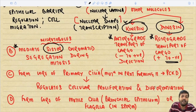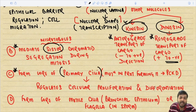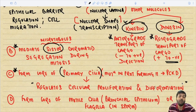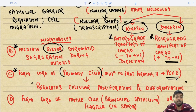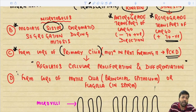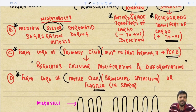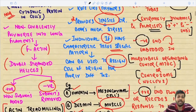Microtubules also mediate sister chromatid separation during mitosis. They form the core of primary cilia, which regulate cellular proliferation and differentiation. Mutations in cilia-forming proteins can lead to adult polycystic kidney disease. Microtubules also form the core of motile cilia in bronchial epithelium and flagella in sperm.